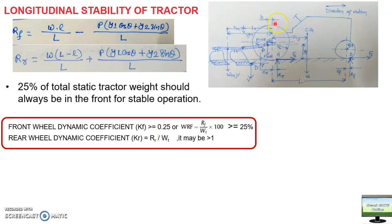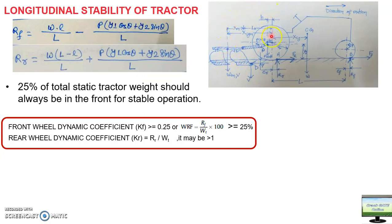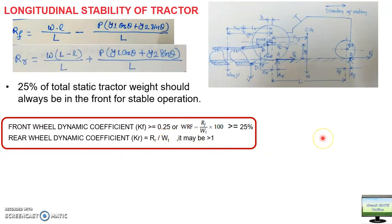Rr can exceed the tractor weight because three things contribute to it: the weight component of the tractor transferred to the rear axle, some of the implement weight supported on the rear tire, and weight transfer from front to rear due to P·sin θ and P·cos θ. With these three components combined, Rr can become even greater than Wt.